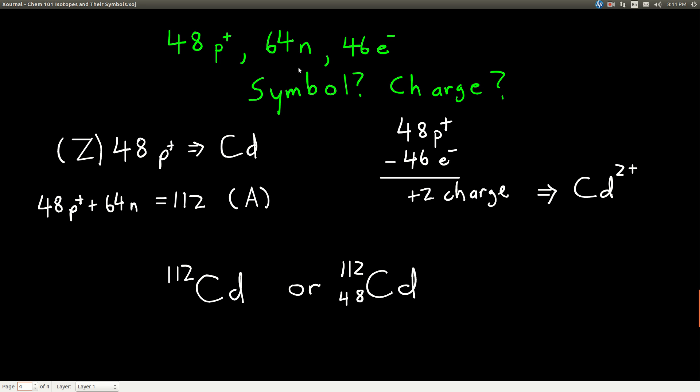Now the charge - because there are fewer electrons than protons, we take 48 protons minus 46 electrons, and the difference is a plus 2 charge. So we would write the symbol for the ion like this: cadmium with a 2+ on the right.